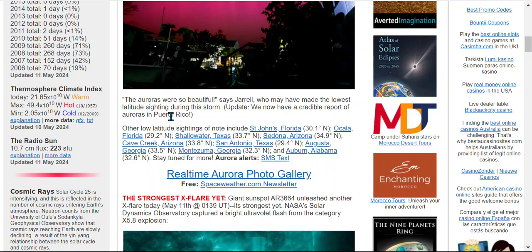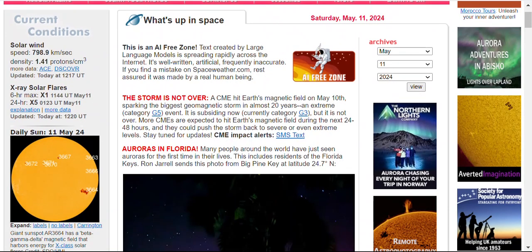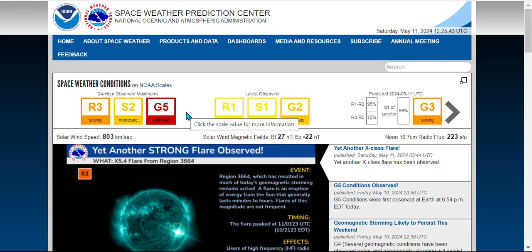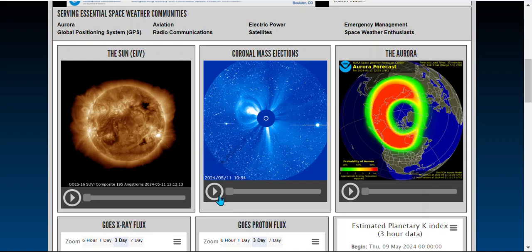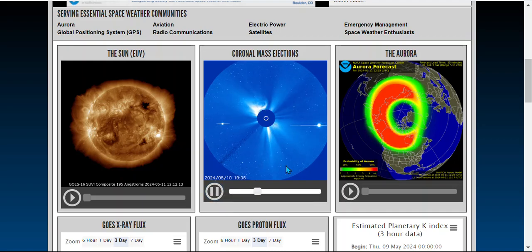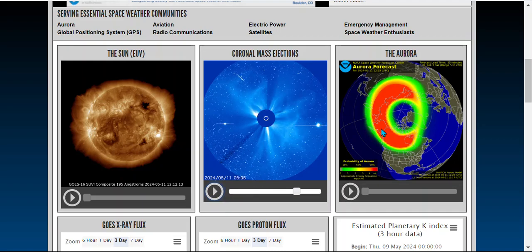That tells me our shields are weaker than I thought if it reached that far. Let's check out what's happening right now. Right now they have it at a G3. Look at this right here - those are protons, electrically charged.